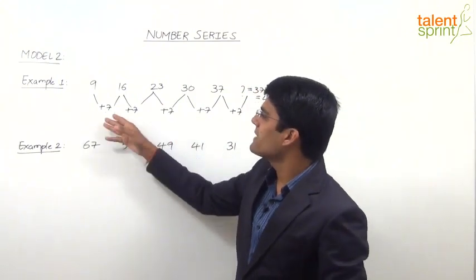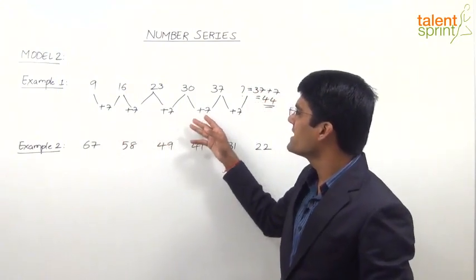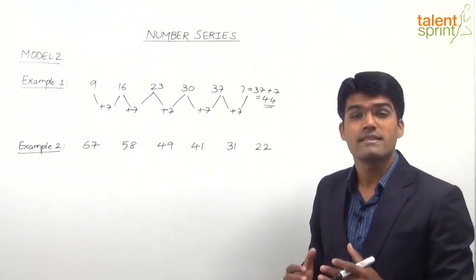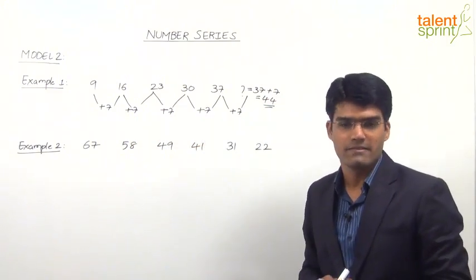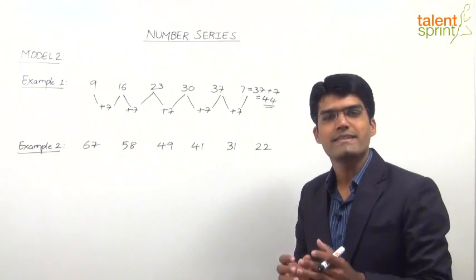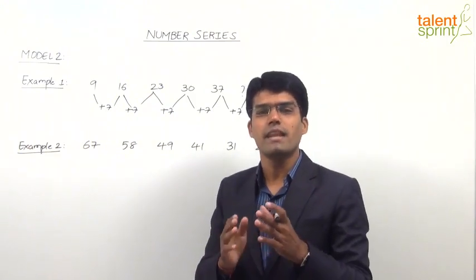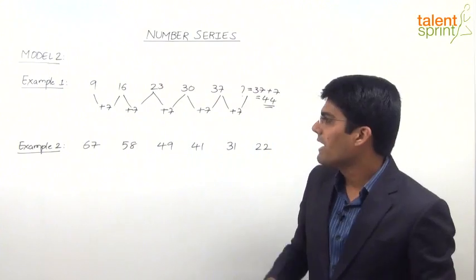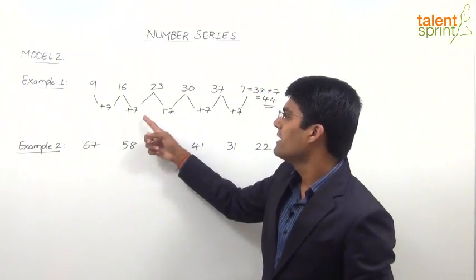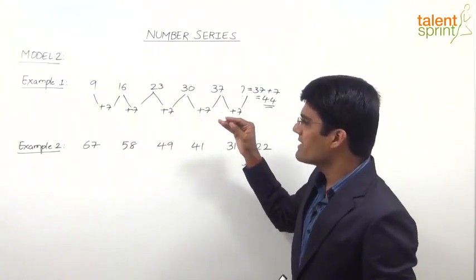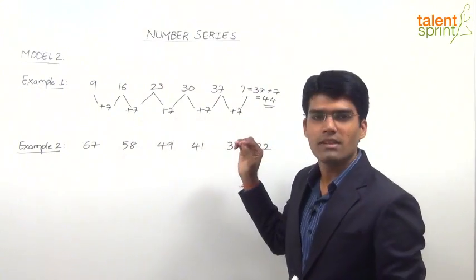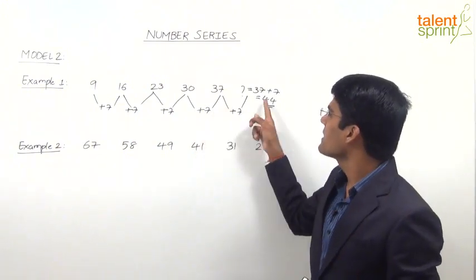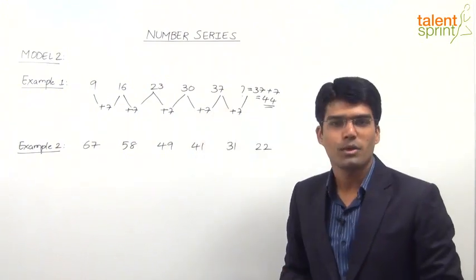The difference between two consecutive terms is always 7, and such a series is called an arithmetic series — where the difference between any two consecutive terms is a fixed value, in this case 7. Once we understand that logic, we can simply find out the missing number as 37 plus 7, which equals 44.